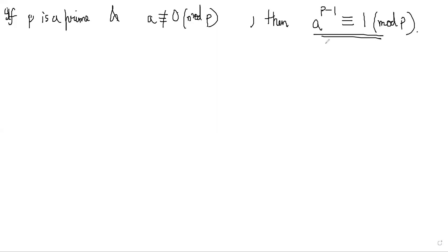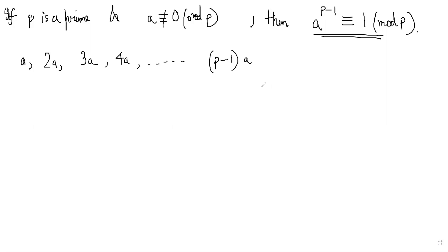How do we want to prove this? Let's try to prove it using this statement. Consider the numbers a, 2a, 3a, 4a, and so on till (p−1)·a. How many numbers are here? There are p−1 numbers. Now let's look at all of these numbers mod p.